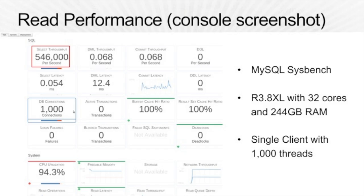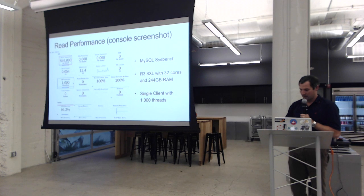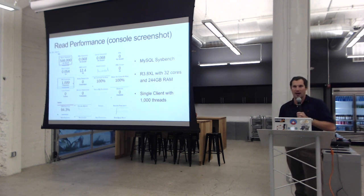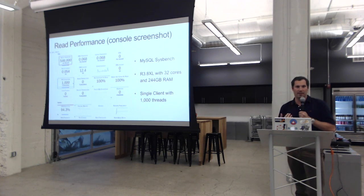On the read side, using the same MySQL Sysbench and the same R3 8XL instance, with a single client and 1,000 threads, select throughput was over half a million per second. Caching helps a lot with Aurora. Reads tend to be the harder workload on a database, especially random access reads that force seeking around on disk. Solid state helps with that, but random access is still more taxing than appending new data on writes.